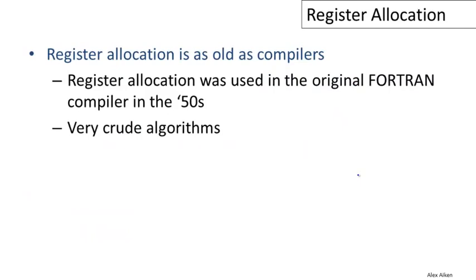It was rapidly noticed that this was actually a bottleneck in the quality of code generation. Limitations on the ability of register allocation to do a good job had a really significant effect on the overall quality of the code that compilers could produce.